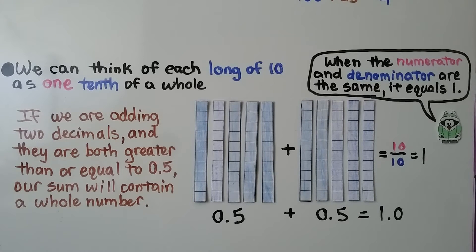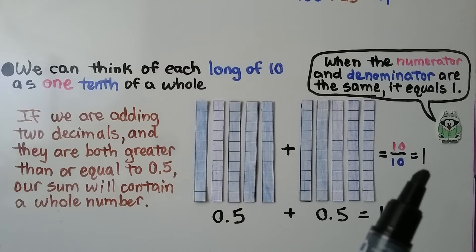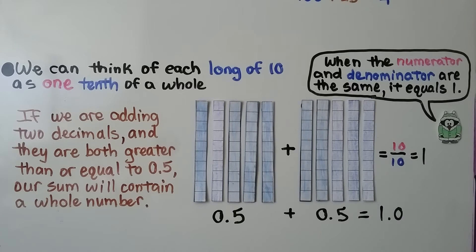We can think of each long of ten as one-tenth of a whole. If we're adding two decimals and they're both greater than or equal to 5 tenths, our sum will contain a whole number. So if each of these are a tenth, we have 1, 2, 3, 4, 5 tenths. And we have 1, 2, 3, 4, 5 tenths. That's 10 tenths. That's equal to 1 whole. When the numerator and denominator are the same, it equals 1. We have 5 tenths plus 5 tenths, it's equal to 1 whole.